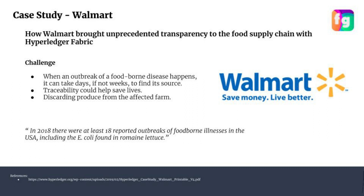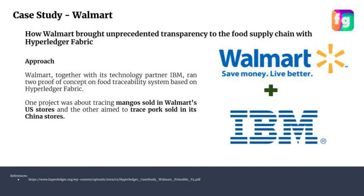Solving this is important because in case of any foodborne disease, the faster you can identify which farm it came from and where that farm's produce has gone, the faster you can control the disease by eliminating the affected stocks. So Walmart moved to the approach — they contacted IBM, a very big tech company, and started a blockchain initiative covering their entire supply chain from farmers to retail stores. They started with a proof of concept with IBM and implemented it in two stores: one for mangoes sold in US stores, and one for pork sold in China stores.